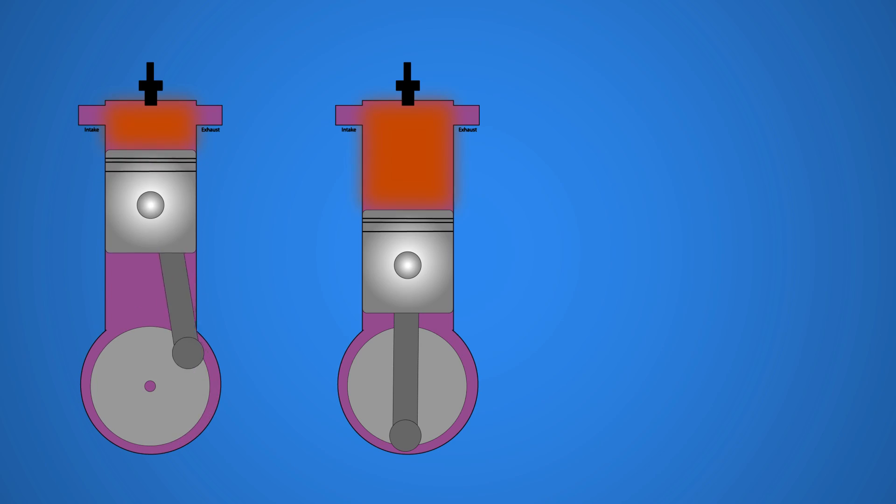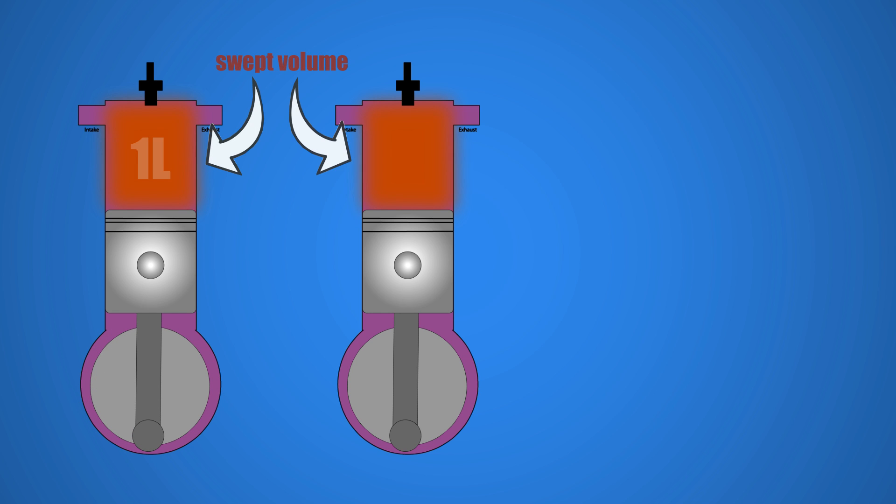In a typical piston engine the displacement is based off of the swept volume of the piston. If we have this swept volume here shown in red equaling one liter and we have an engine with two cylinders, the total displacement would be multiplied by two to have a two liter engine.